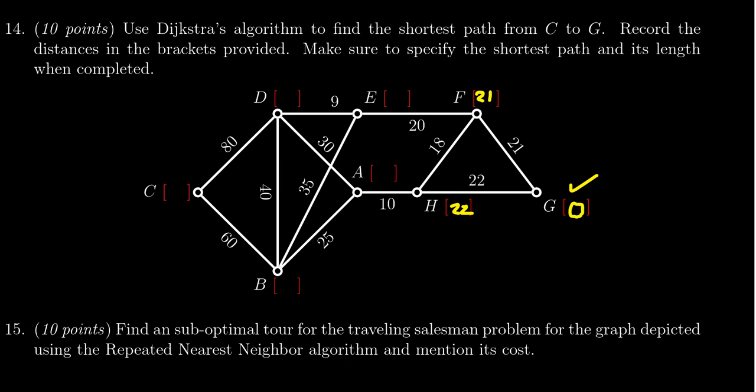The next smallest number is F, so we come over here to F. Who is connected to F? F could go up to E, that's 20 more, so 20 plus 21 gives us 41. We could go down here to H, but you get 21 plus 18 which is bigger than 22, so it turns out we're not going to use that edge. So now we're done with F.